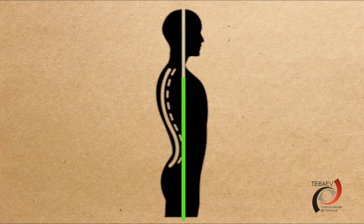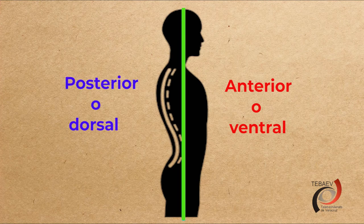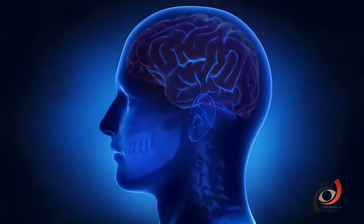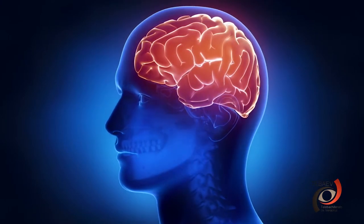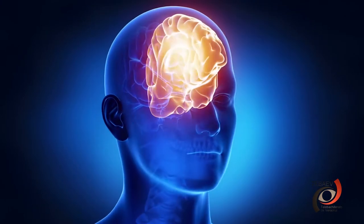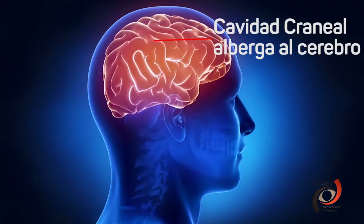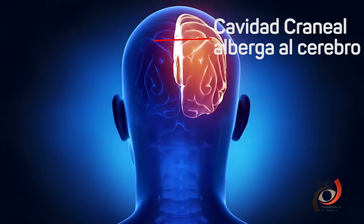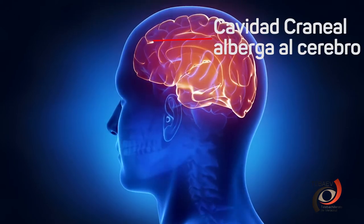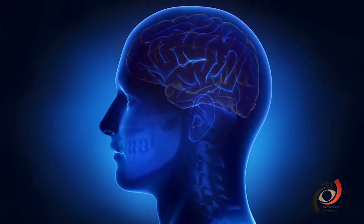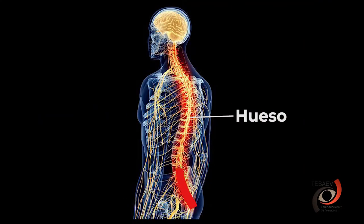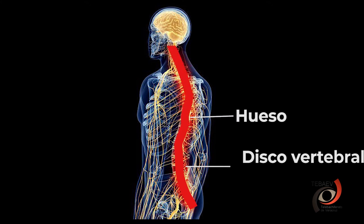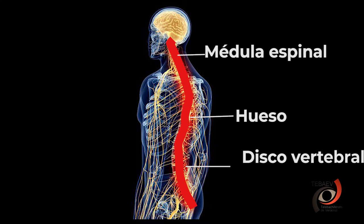La cavidad dorsal contiene órganos que se localizan en la parte posterior de acuerdo con el plano frontal. Para facilitar su estudio, la cavidad dorsal también se divide en dos secciones. La parte superior es la cavidad craneal, que alberga el cerebro. La sección inferior es el canal vertebral, donde se hospeda una larga y frágil estructura tubular de tejido nervioso conocida como médula espinal.